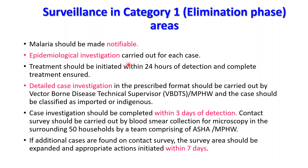In Category 1 elimination-phase areas, each malaria case must be mandatorily notified to authorities. Epidemiological investigation is to be carried out for each case, treatment initiated within 24 hours of detection, and detailed case investigation carried out by the vector-borne disease technical supervisor. Cases should be classified as imported or indigenous, investigation completed within three days, and a contact survey conducted by blood smear examination in surrounding 50 households. If additional cases are found on contact survey, the survey area should be expanded with appropriate action within seven days.